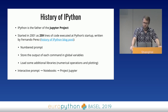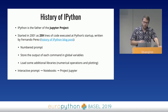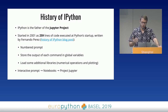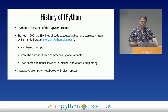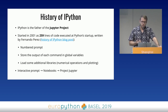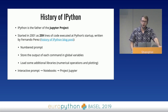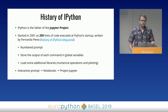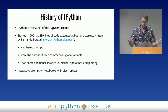IPython was initially created as 259 lines of code by Fernando Perez in 2001. This code was just executed at Python startup, and all it did was display a numbered prompt, store the input of each command in a global variable, and import some libraries for mathematical operations and plotting. It's been around for over 18 years. Initially it was just an interactive prompt for Python. Later it was turned into IPython Notebooks to make data analysis easier. Then Project Jupyter was born, decoupling the Notebook part from the Engine part so people could use Notebooks with different programming languages.